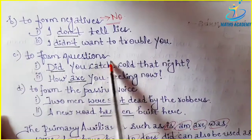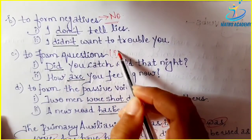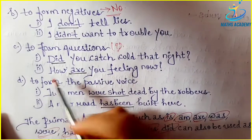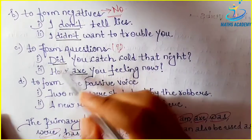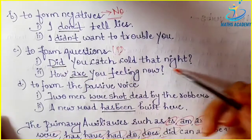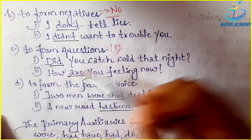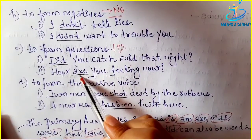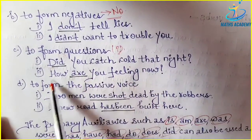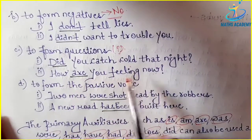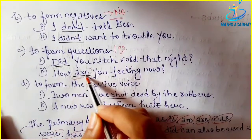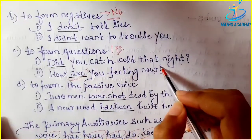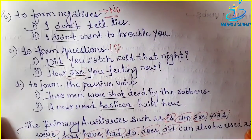Next, auxiliaries are also used to form questions. For example: 'Did you catch cold that night?' 'How are you feeling right now?' Here, did and are are used to form questions — did forms the question and are supports it.